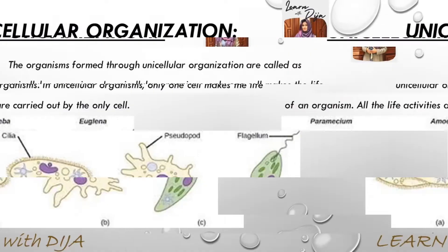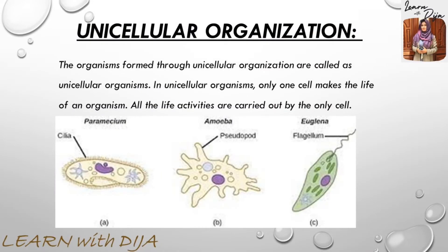The first type is unicellular organization. This means the organism is made of a single cell. In unicellular organisms, only one cell carries out all the life activities of the organism.